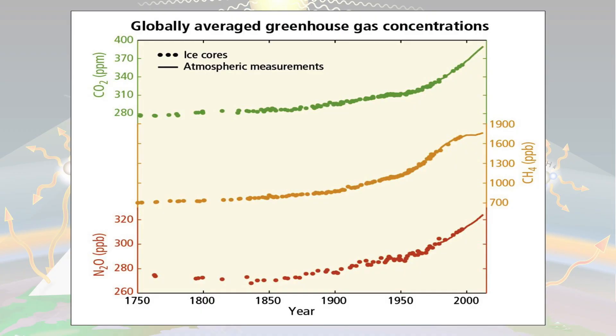Because of the greenhouse effect, human beings can exist on Earth. The Earth's environment is livable because the average surface temperature is 15 degrees centigrade, and this is due to the greenhouse effect. Nevertheless, greenhouse gas concentrations are increasing, causing a lot of impacts on the different components of the climate system.